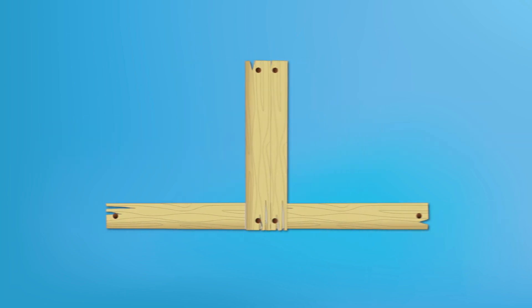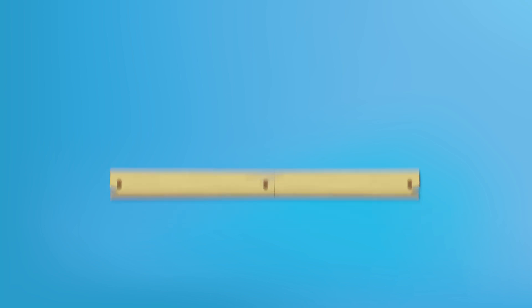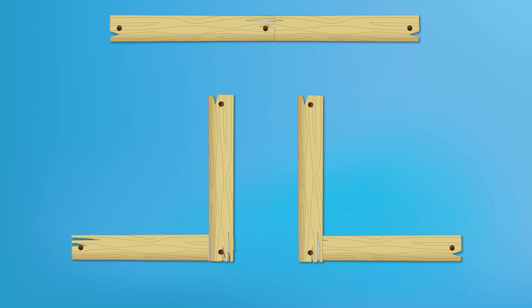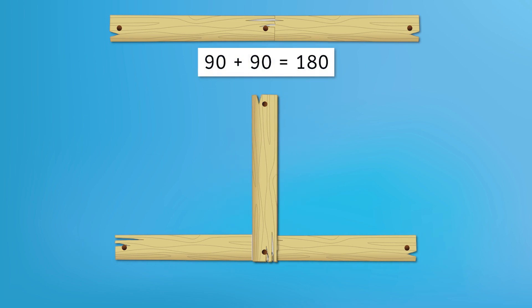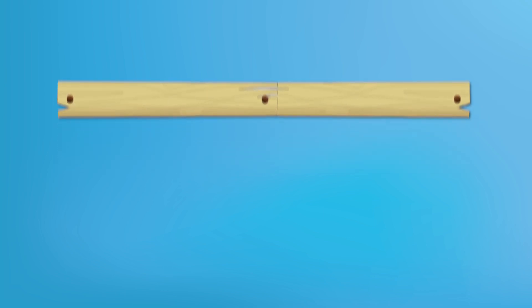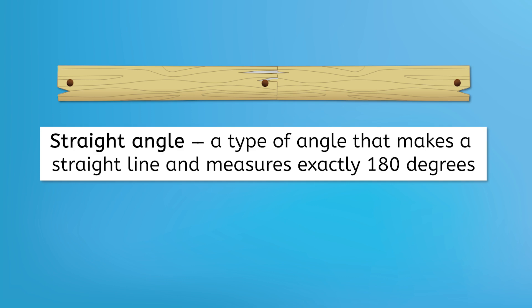It looks like we took two right angles and put them together. How many degrees is a right angle? 90 degrees. Now what happens if we add two 90 degree angles together? 90 plus 90 is 180. Since this angle is made of two right angles, it measures 180 degrees. This is still two pieces joined together, it's just harder to see because they end up laying flat, making it a straight line. That's why we call this type of angle a straight angle. The definition of a straight angle is a type of angle that makes a straight line and measures exactly 180 degrees. Take a moment to write down this definition now.